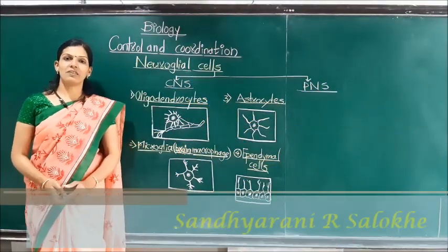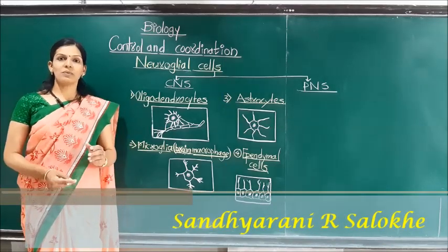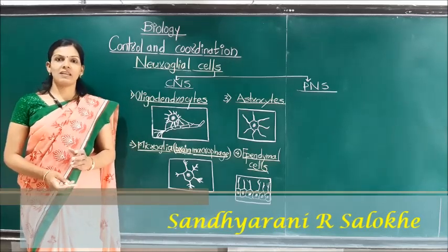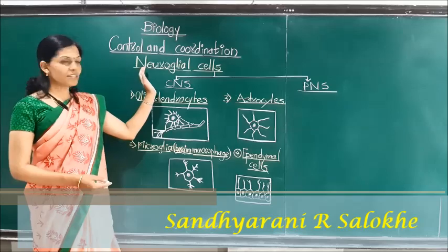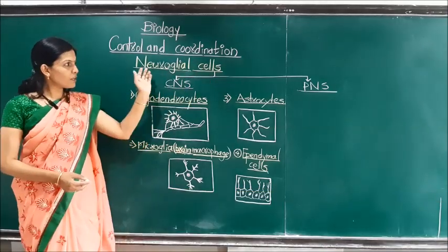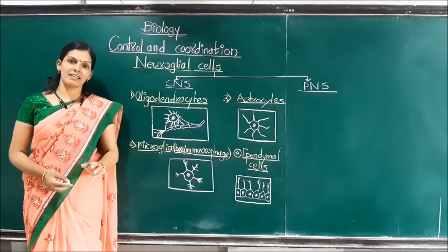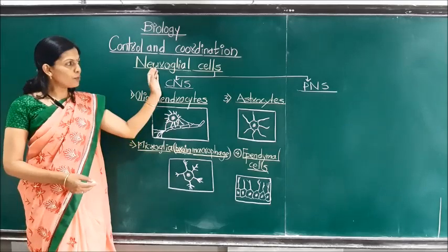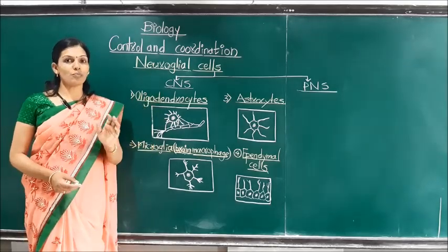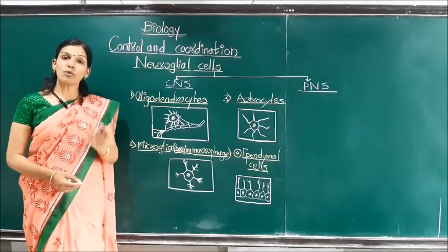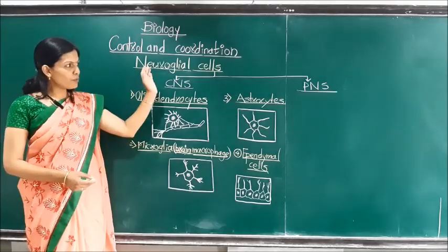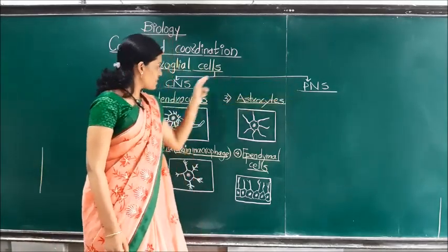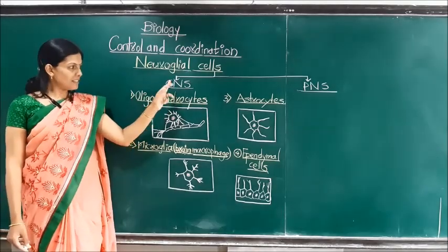In the previous lecture we have seen the structure of nervous tissue, including the structure of nerve fibers. In this lecture we will focus on the structure of neuroglial cells. Neuroglial cells, also called glial cells, are the supportive cells of the nervous system. They do not produce any stimulus or impulse, but they give support and protection to the nervous system. These neuroglial cells are present in both the CNS and the PNS.